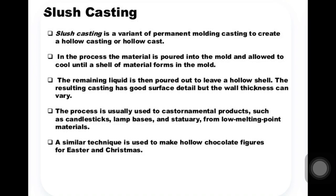Slush casting is a variant of the permanent mold casting to create a hollow casting. The slush casting process is a variant process of permanent mold casting, which we covered in the previous series of lectures. This variant process is used to produce hollow casting objects or hollow casts.